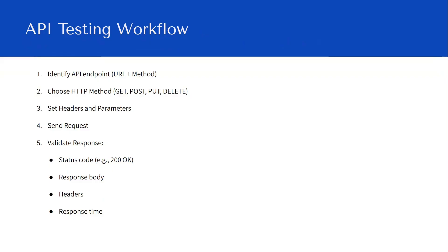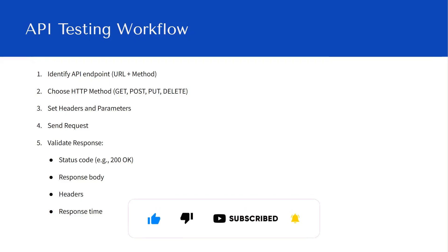The API testing workflow involves identifying the API endpoint and choosing the HTTP method. There are four methods: GET to fetch data, POST when you're sending a request based on some input — like performing a login with username and password to get a response, PUT when you update data, and DELETE when you remove data. These are the four common methods used in API testing. We also set headers and parameters to send requests, and the response includes a status code, response body, headers, and response time.